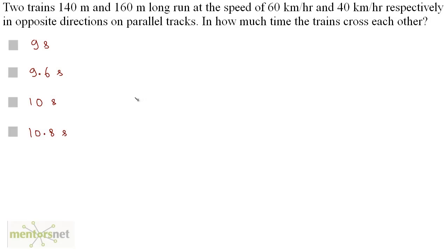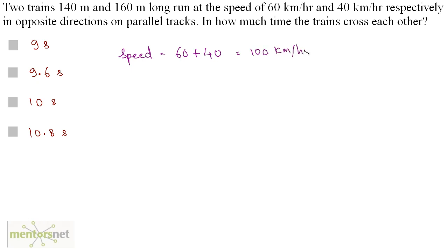Two trains, 140 meters and 160 meters long, run at speeds of 60 kilometers per hour and 40 kilometers per hour respectively in opposite directions on parallel tracks. In how much time do the trains cross each other? Since they travel in opposite directions, the relative speed is the addition of their speeds: 60 plus 40 equals 100 kilometers per hour. Converting to meters per second: 100 × 5/18 m/s. The total distance to cross is 140 plus 160 equals 300 meters.